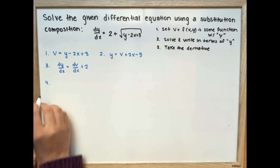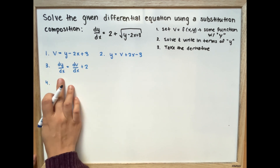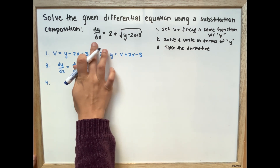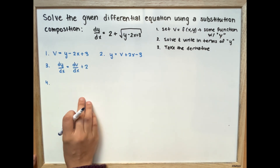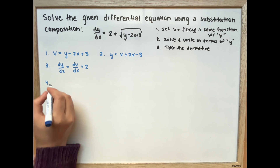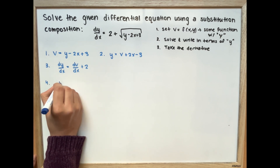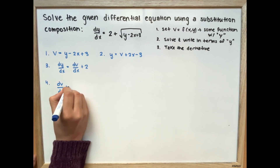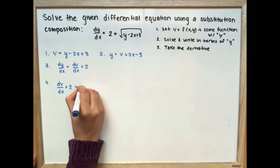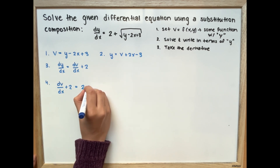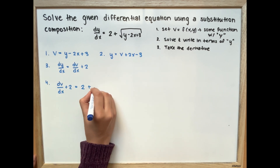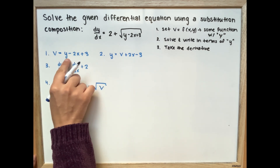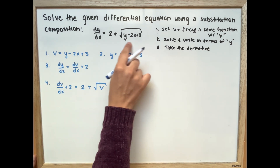So for our fourth step, we're going to take our dy over dx and substitute it into dy over dx in our original equation. So we get dv over dx plus 2 is equal to 2 plus the square root of v, because we set v equal to everything under the square root.